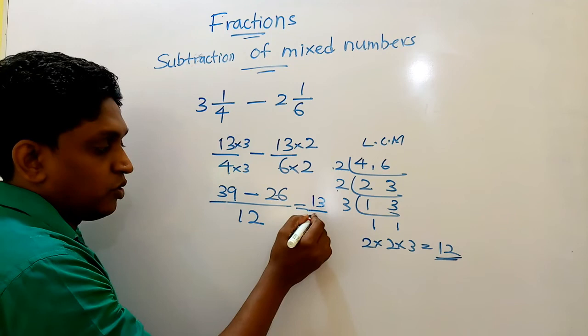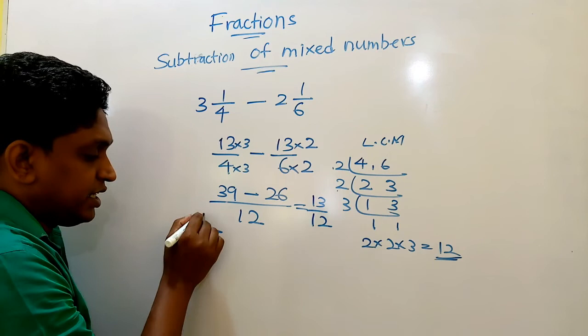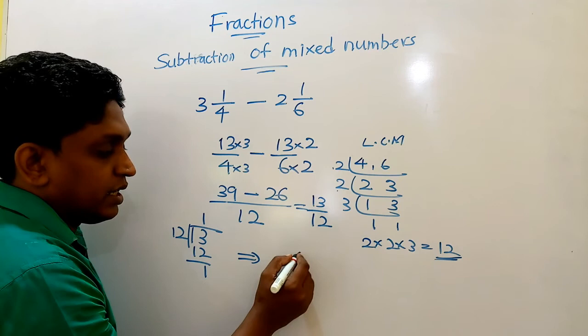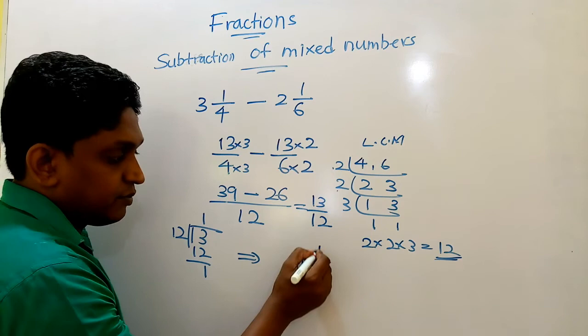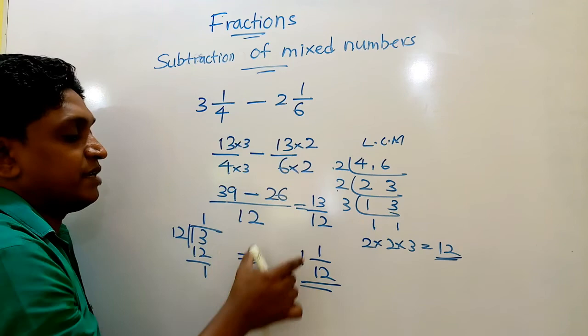So 13 over 12. So we want to divide now 13 by 12. How many 12s in 13? It is 1. Remaining 1. That means this 13 over 12 as a mixed number. Number of 12s in 13 is 1, remaining 1. So 1 and 1 over 12.